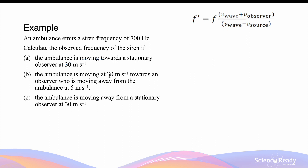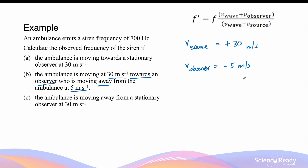The ambulance is moving at 30 m/s towards the observer, so the velocity of the source is again positive 30 m/s. The observer is also moving away from the ambulance at 5 m/s, so in this example the observer has a non-zero velocity. Since the observer is moving away from the source, the speed of 5 m/s is written as minus 5 m/s. So the observed frequency is equal to 700 Hz multiplied by (340 − 5) divided by (340 − 30). The original frequency and the velocity of sound in air are unchanged. This gives an observed frequency of 756 Hz.